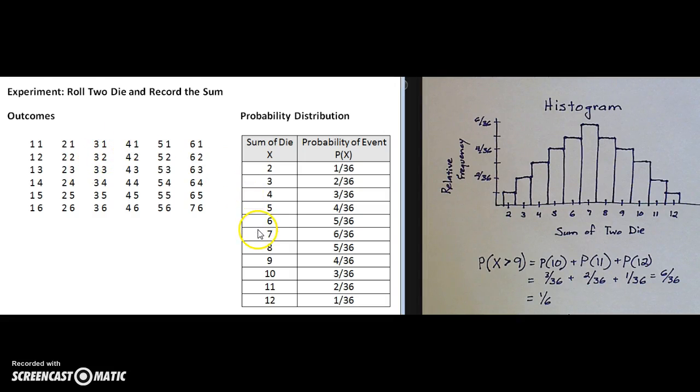The event of rolling a sum of 7 has the highest probability, 6 out of 36. You'll notice in this table that the probabilities increase and then once we hit the sum of 7 they begin to decrease.